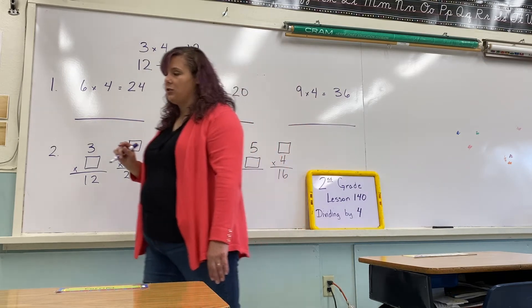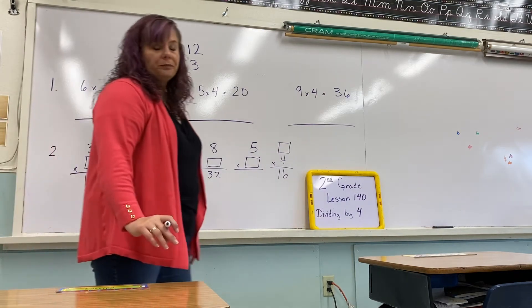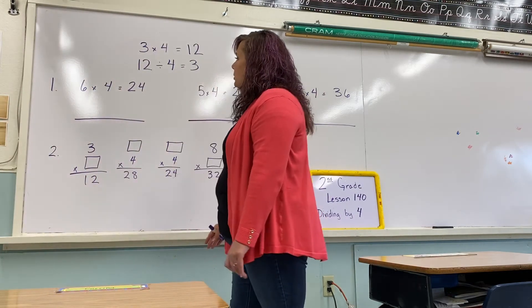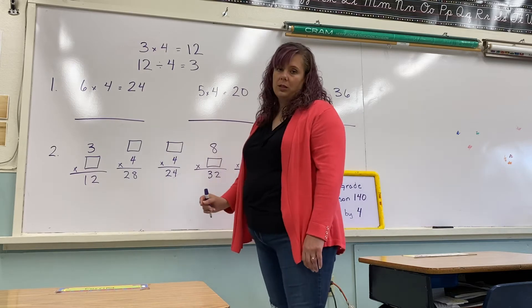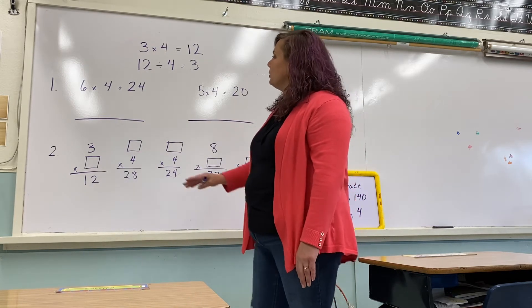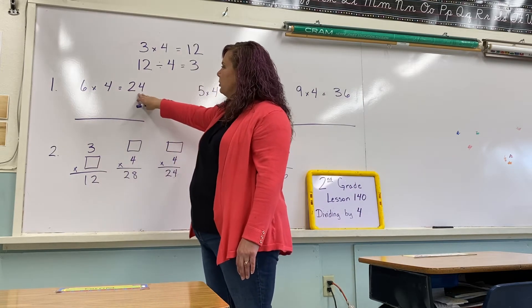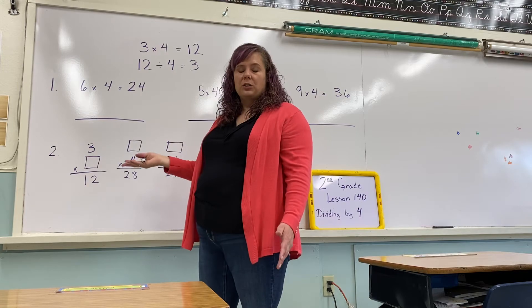So, we're going to look at your math page. We're on page 284, and we're going to do 1 and 2 together, because I want you to understand the concept. The first one says 6 times 4 equals 24. We're going to turn this into a division problem.